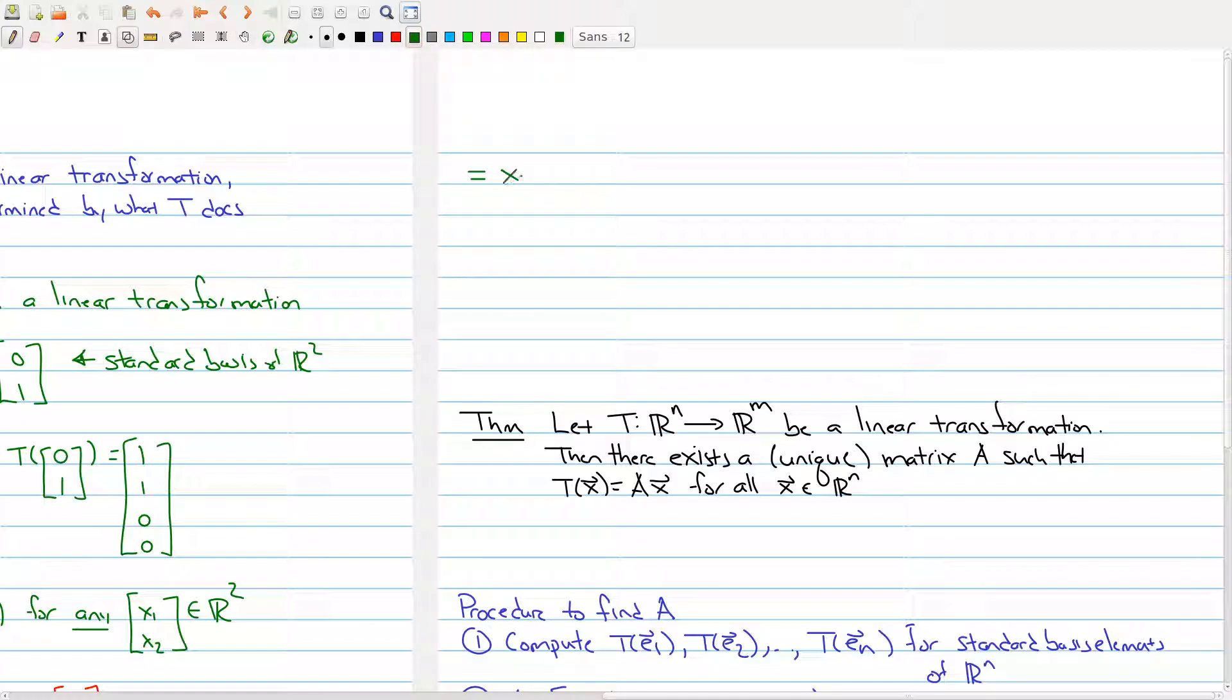And what we end up with is the following. We end up with x1 times the vector [1, 2, 3, 4] plus x2 times the vector [1, 1, 0, 0]. So that gives us the answer.